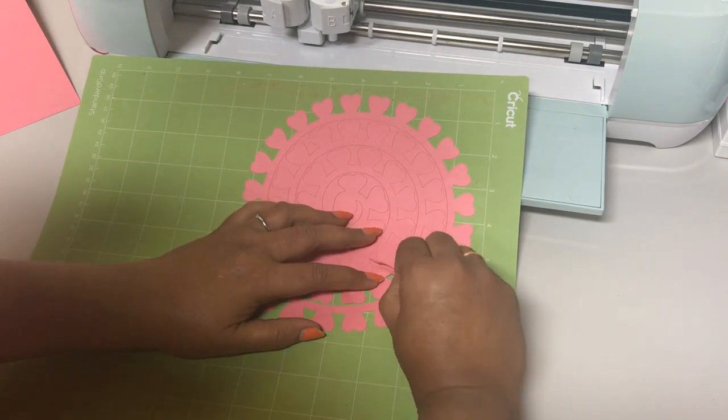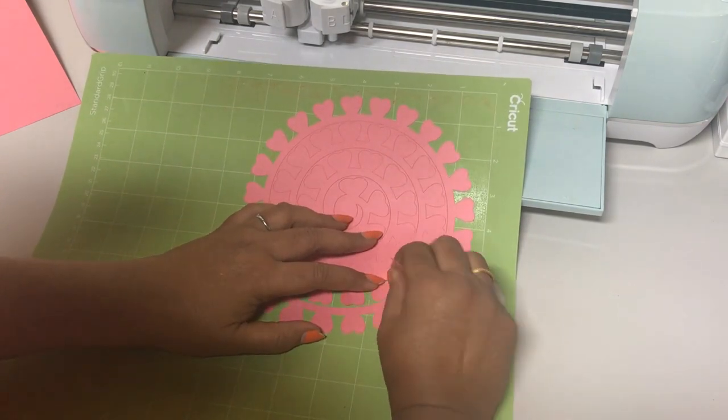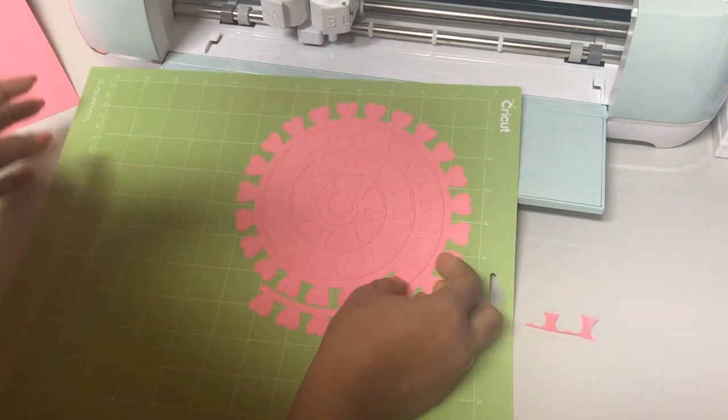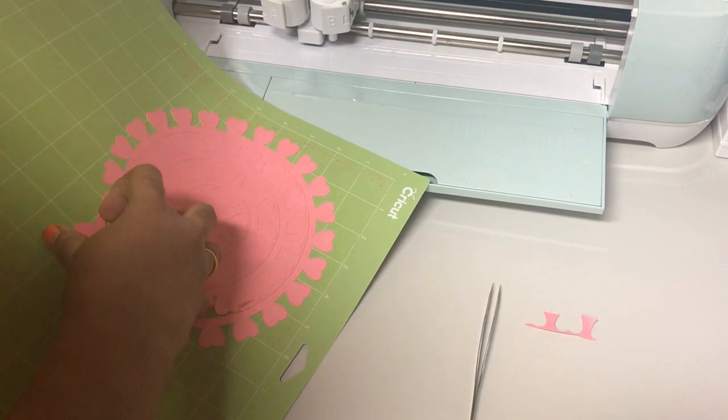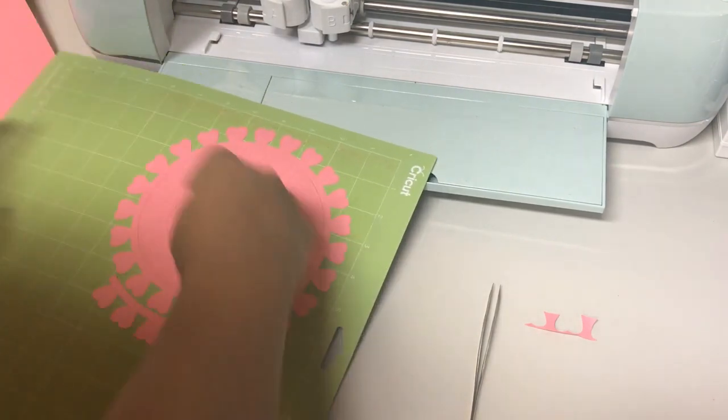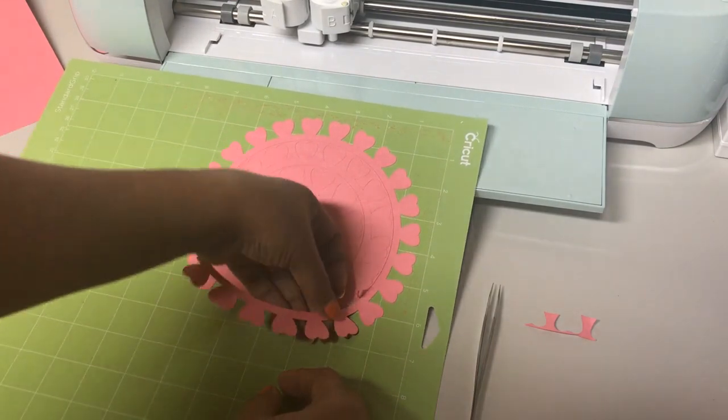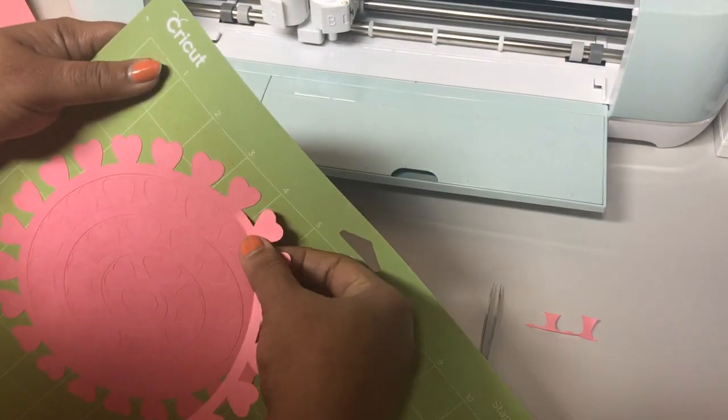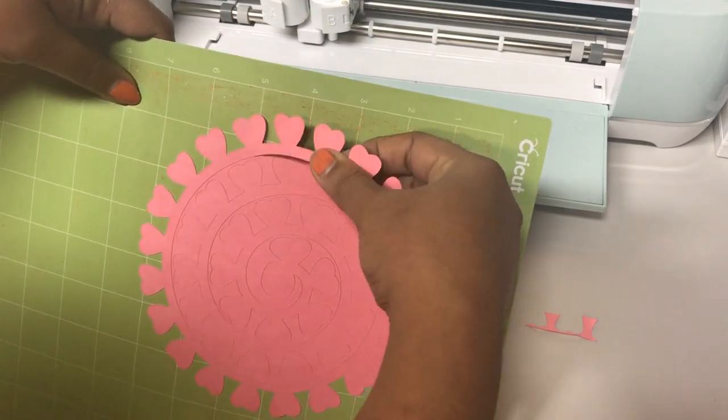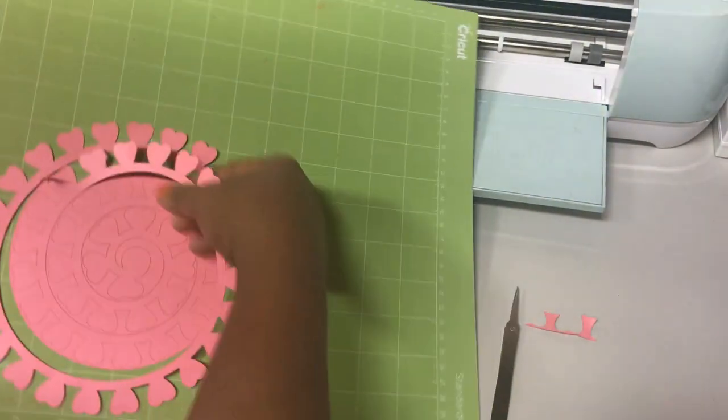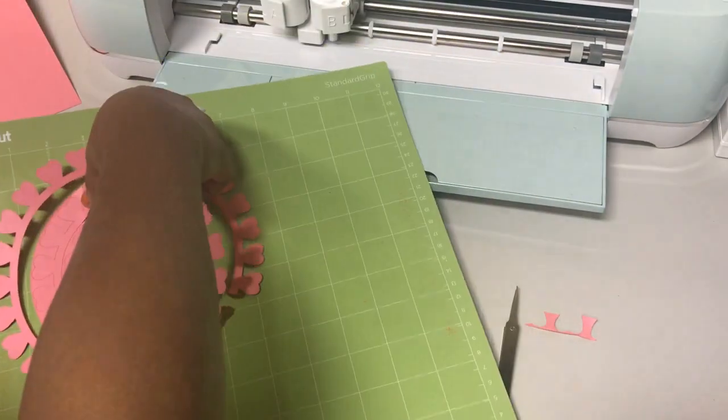You can use your tweezer or the tools that come along with the Cricut machine, anything you can use to remove those. Because the mat is sticky, the design would be stuck to the mat, so you have to be very gentle in removing it. You can use a spatula but I don't have one, so I'm trying to remove it with my hand.